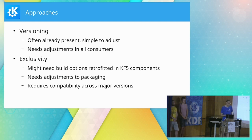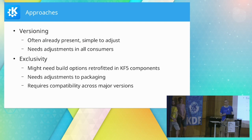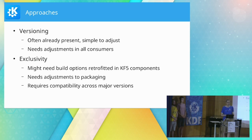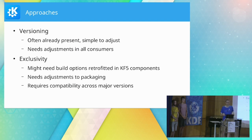Some of this only shows up as we move to a pure 6 session. Another standard approach is exclusivity — just having one of the things, like in the wallet scenario. In some cases we need to retrofit build options to disable stuff in KF5 because we weren't prepared for this, and we might need adjustments in packaging. But it's generally completely transparent for the consumer side. However, that implies we need to stay compatible across major version changes. A prominent example is icon themes — they are very big so we don't want to duplicate them, and the XDG icon spec defines compatibility anyway.